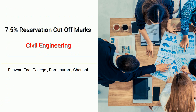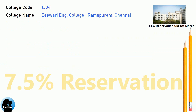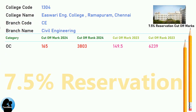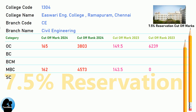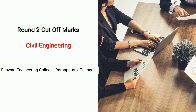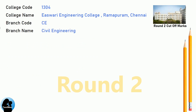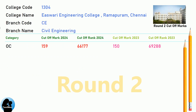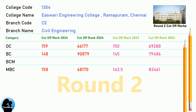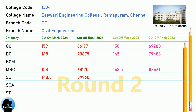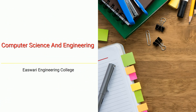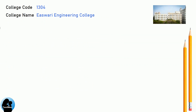DNA 7.5 Reservation Cut-Off for Eshwari Engineering College in Civil Engineering. DNA Round 2 Cut-Off for Eshwari Engineering College in Computer Science and Engineering.